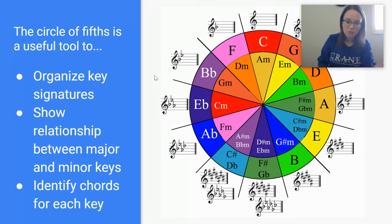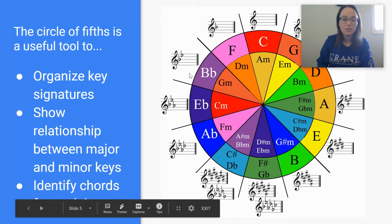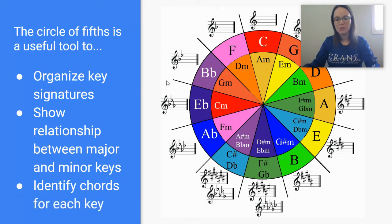And another thing that is important, another way that you can use the circle of fifths is that it helps you to identify chords within each key. Sorry, I know you can't see that because that bar came up. I'll stop moving my mouse so you can see it. It helps you identify chords in each key. Again, this is something we'll talk about in a future video, but each key has chords that tend to be used more often than other chords.